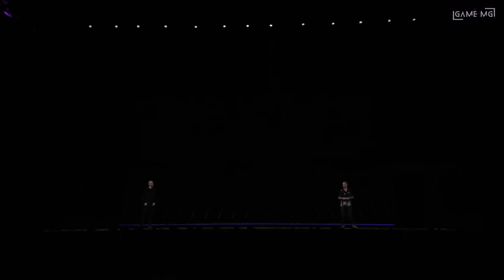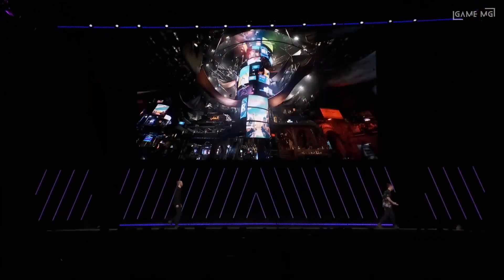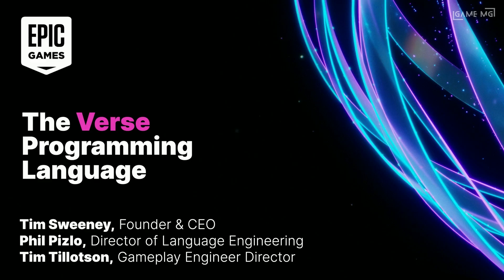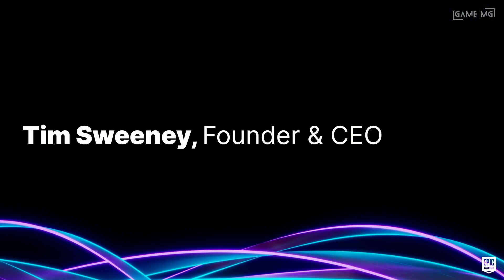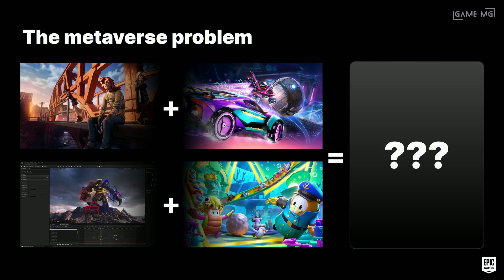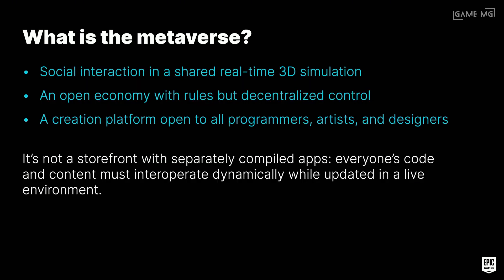Unreal Engine 6 isn't officially announced yet, but there's definitely a buzz. The YouTube video leaned into that speculation, suggesting Verse would be deeply integrated into UE6 — a logical assumption if Verse is the language for the metaverse they're building. The video even mentioned potential upgrades like Lumen 2.0 and Nanite 2.0, hinting at even more photorealism. And it's not purely about games — Unreal Engine's use in movies and TV virtual production is already huge. These advancements, maybe pushed along by Verse, could blur the lines even further between traditional filmmaking and real-time virtual sets.